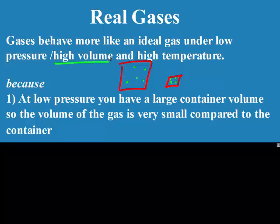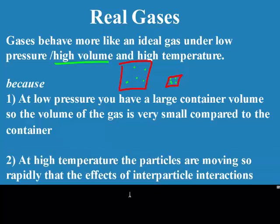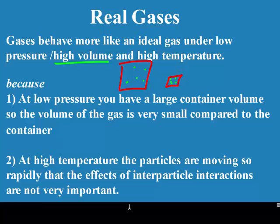High volume means the gas is behaving like an ideal gas. And at high temperatures, particles are moving very rapidly — therefore the effects of attractions or repulsions are minimized. So at high volume and high temperature, gases are most ideal because they follow kinetic molecular theory more.